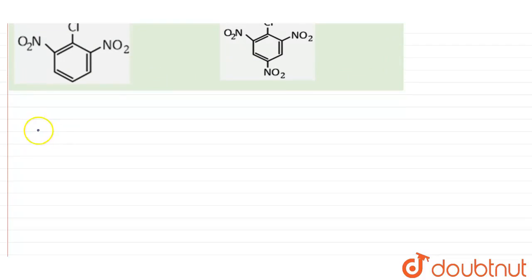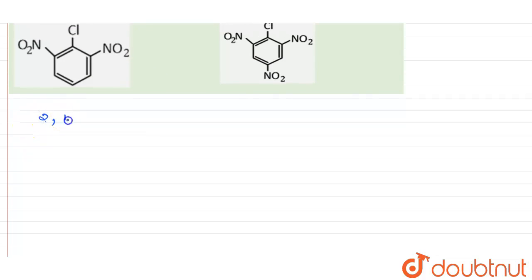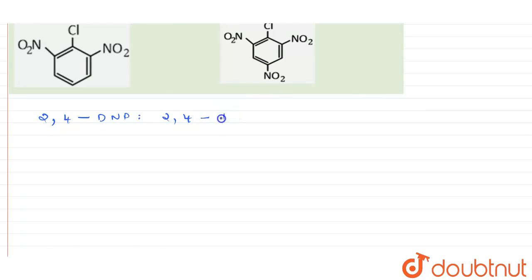So first of all we must know what is this 2,4-DNP. When we talk about the molecule 2,4-DNP, it is basically 2,4-dinitrophenyl hydrazine. This is the name of this molecule and the structure for this molecule is first of all it is very much clear that phenyl ring is involved, so we can draw a phenyl ring.